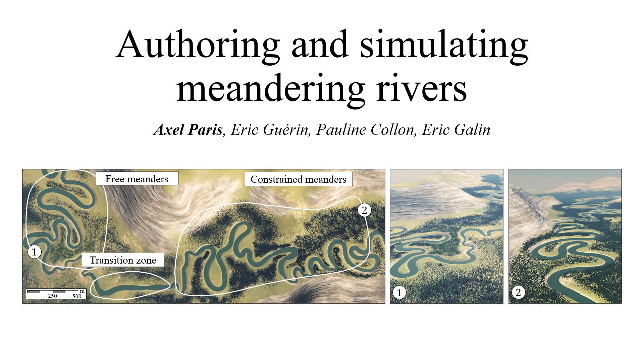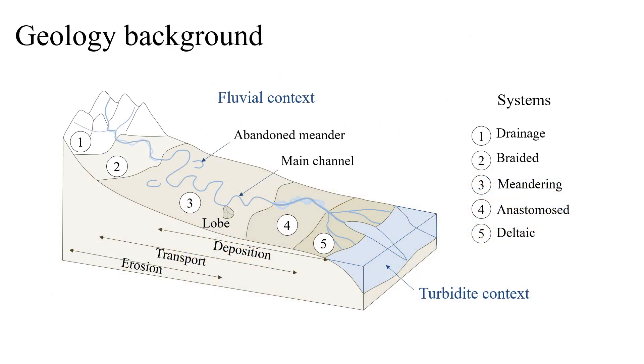We present a method for authoring and simulating meandering river networks on virtual terrains. Rivers are important landforms that shape the underlying terrain. River channels exhibit different trajectory patterns depending on their distance to the source, terrain topography, and other environmental conditions.